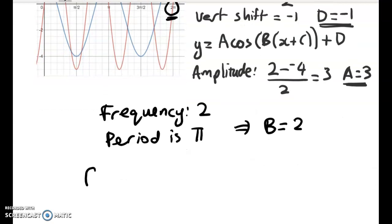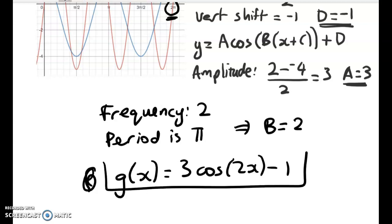So that gives me finally a value for b, which is 2. So the blue function is, what am I going to call it? I'll call the blue function g of x, and it's 3 cos of 2x, take away 1. So that's that one done.